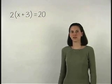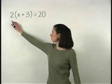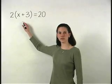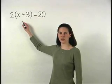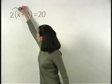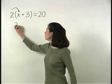To solve this equation, we start by distributing the 2 through the parentheses on the left side. So we have 2 times x, which is 2x.